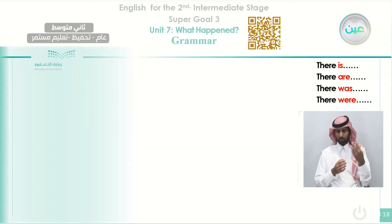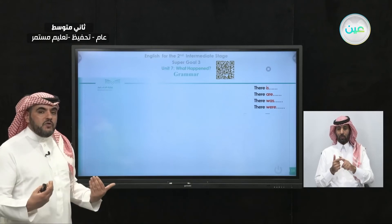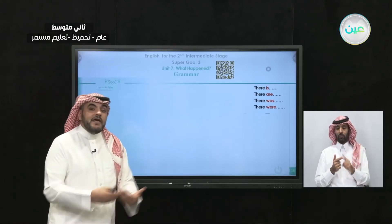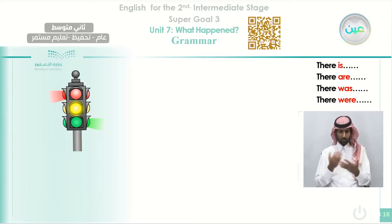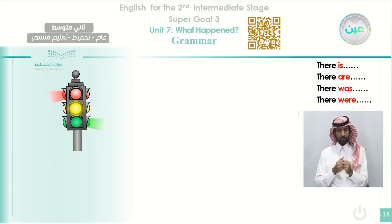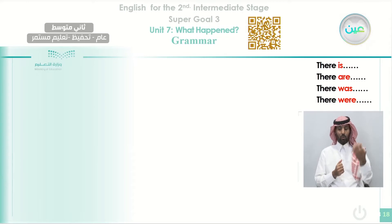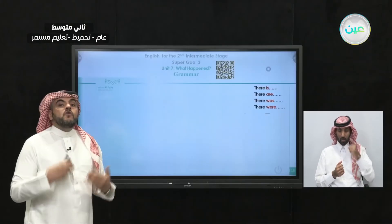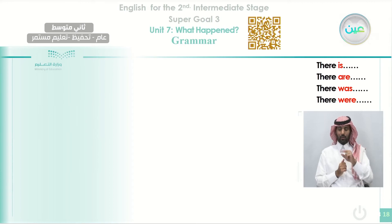Now we start our grammar for today. We're going to study there is, there are, there was, and there were. If you look at this traffic sign, we can describe what we see. We can say 'there is a traffic sign.' If the traffic sign disappears, we say 'there is not a traffic sign.' But if we talk about a few seconds ago when we had the traffic sign on screen, we say 'there was a traffic sign.'